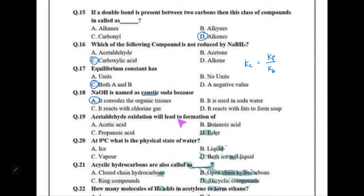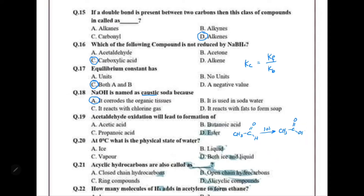Acetaldehyde oxidation leads to the formation of carboxylic acid. The carboxylic acid formed will have the same number of carbons as the aldehyde. Acetaldehyde is composed of two carbons, so its oxidation produces a two-carbon carboxylic acid, which is known as acetic acid (ethanoic acid).